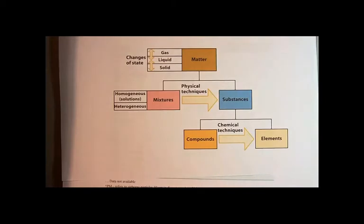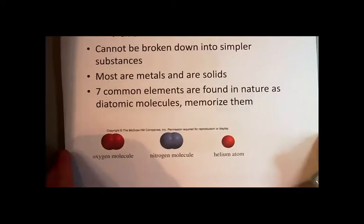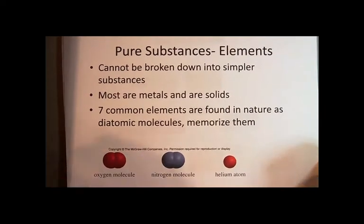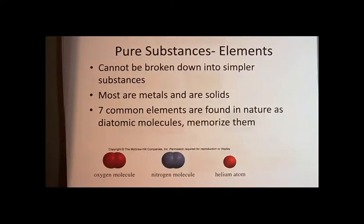First of all, the pure substances box was separated into something called compounds and something called elements. So the definition of an element is, it's a substance that cannot be broken down into simpler substances. Fundamentally, it's all the same type of atom that makes up an element, and chemically, you cannot break it down into a simpler substance.